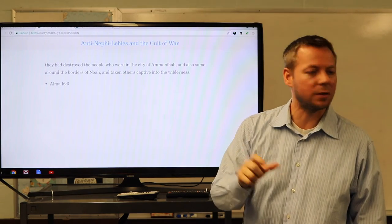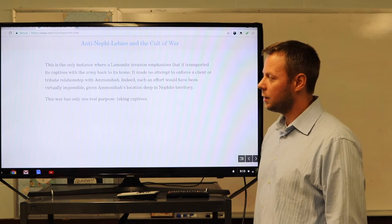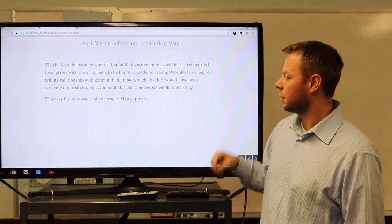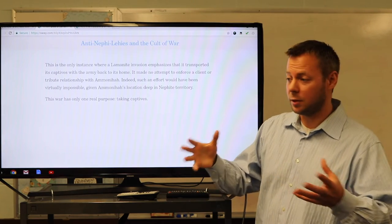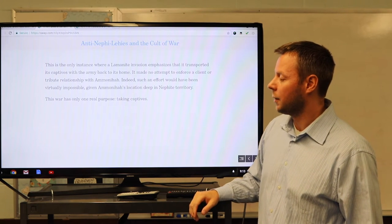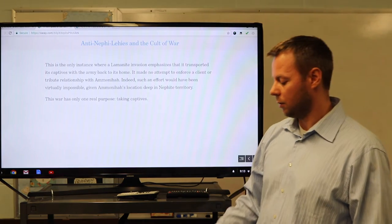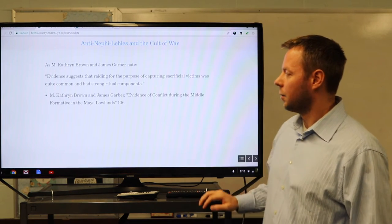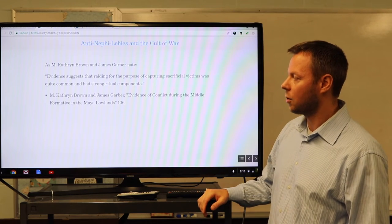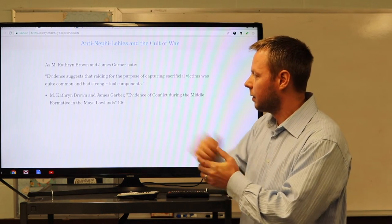So what did they do? They had destroyed the people in the city of Ammonihah and also some of them around the borders and taken others captive into the wilderness. This specifically mentions the captives taken back in the wilderness, which are rescued, which we talked about last time through the Nephite intervention. This is the only instance where Lamanite invasion emphasizes that it transported its captives with the army back to its home. It made no attempt to enforce a client or tribute relationship with Ammonihah. Right? Lots of times that's the reason for war to establish a tribute relationship. Indeed, such an effort would have been virtually impossible given Ammonihah's location deep in Nephite territory. This war only has one real purpose, the taking of captives. So they go around to a soft spot, destroy, and take some captives because they need to install their new king.